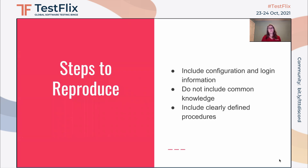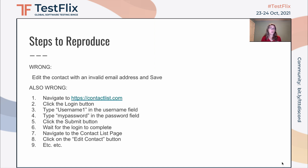Steps to reproduce. It's important to include configuration and login information, meaning what user you were logged in as. But make sure not to include common knowledge, because that's just a waste of space and makes it harder to read. Do include clearly defined procedures. So here are a couple of wrong examples. First: 'Edit the contact with an invalid email address and save.' That doesn't give enough details — is the developer supposed to edit the contact by including an invalid email address, or are they supposed to be editing a contact that already has an invalid email address? But the next example is also wrong — it has too many details. 'Navigate to contactlist.com' — probably the developer knows how to get to your application. 'Click the login button, type username one in the username field,' and so on.